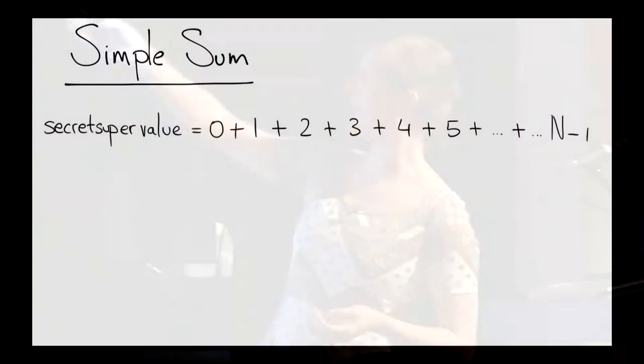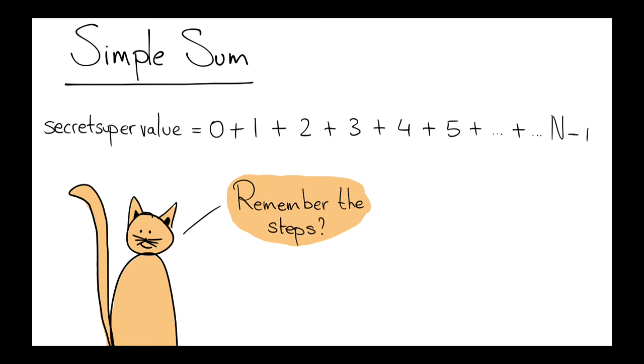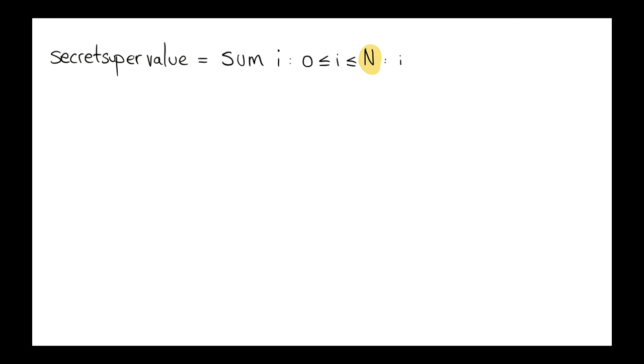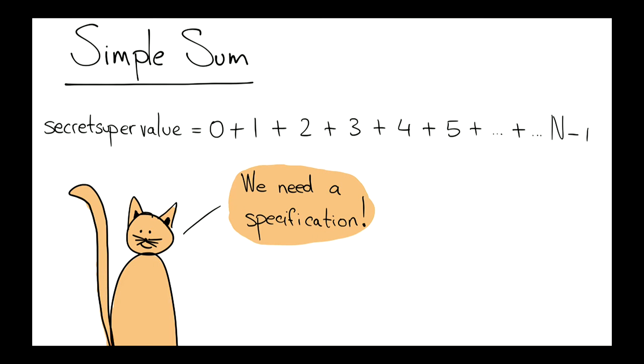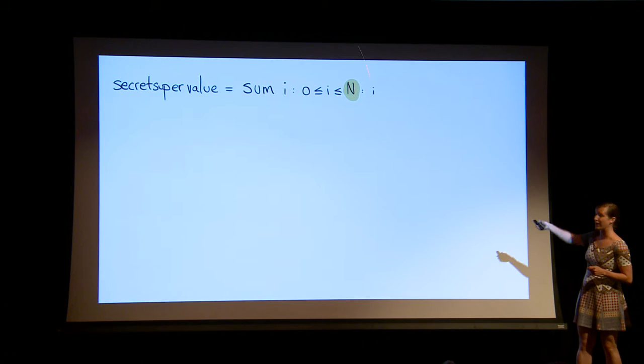So let's start with something super simple. We want to sum a number of values from 0 to n minus 1 to give us a secret super value that we're calculating. So remember the steps: the first thing we need after we have a problem is write a specification. This is our value, and you can write it down as the sum of all values i between 0 and n, and what you're going to sum is the value i.